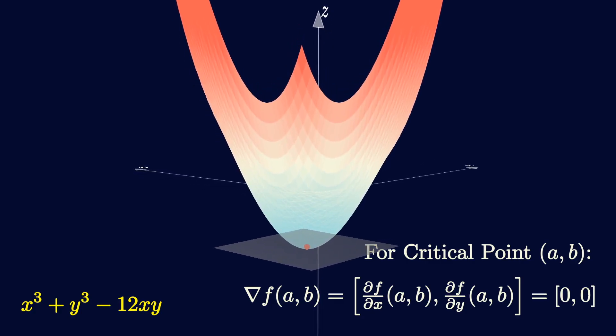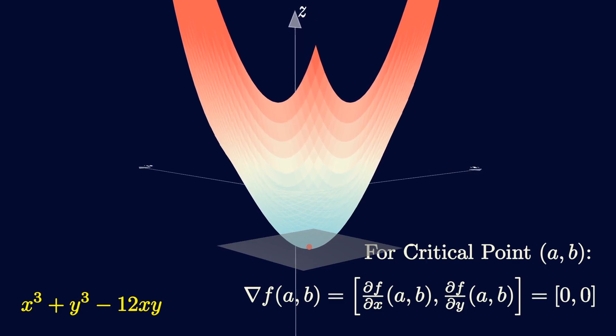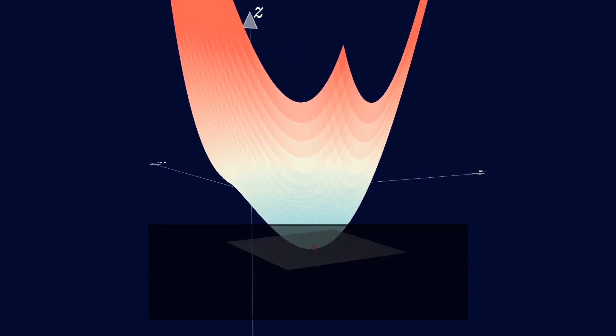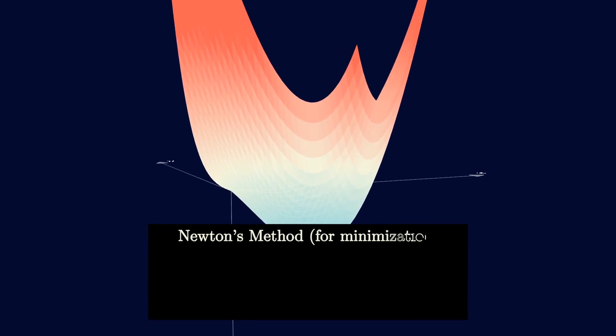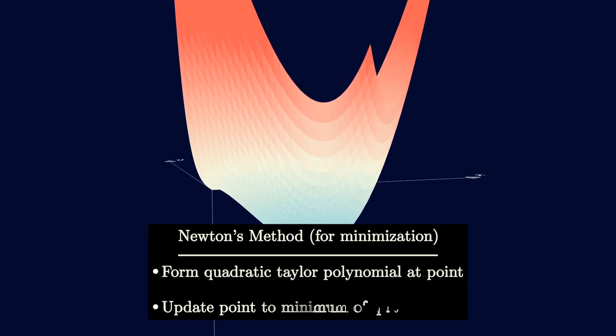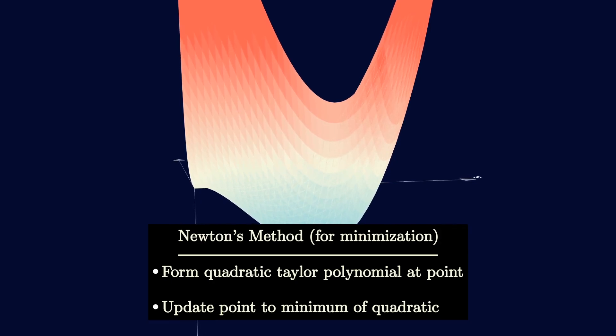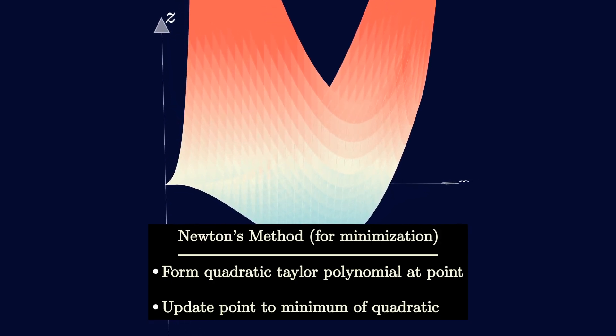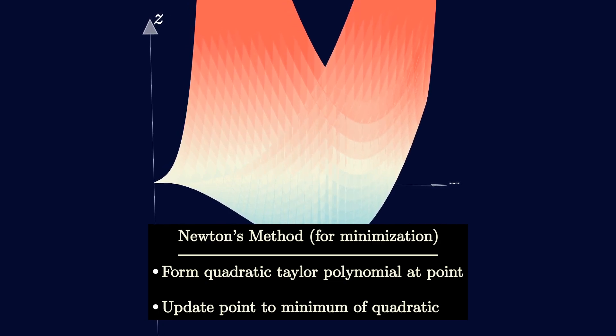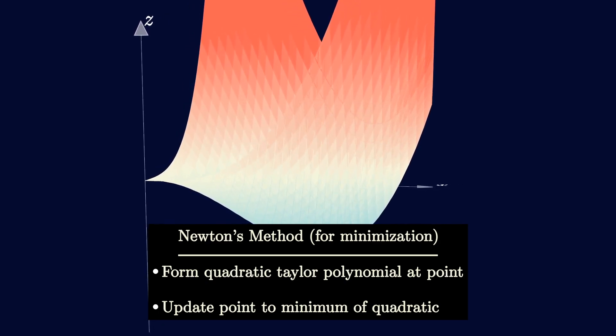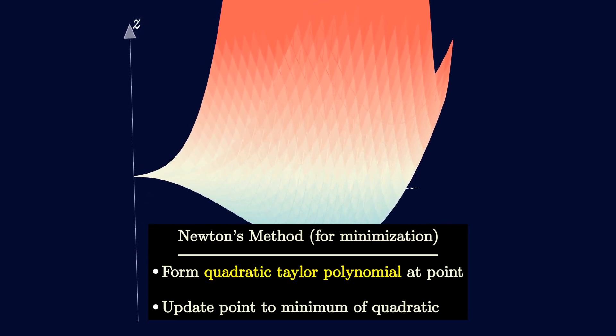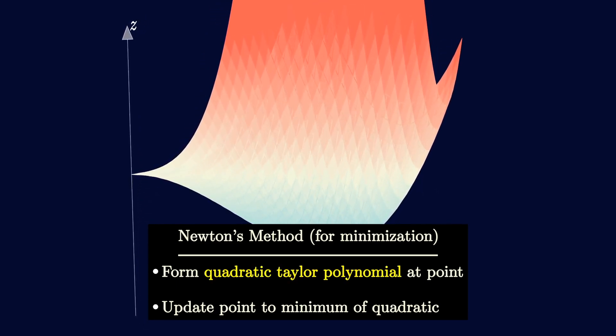Geometrically, this means the tangent plane is flat at that point. We found these critical points using Newton's method before when we only had one variable functions. For minimization problems, we just repeatedly found quadratic Taylor polynomials and minimized that until we converged. We can try to do a similar thing here, but we first need to understand what a quadratic Taylor polynomial even is for a multivariate function.